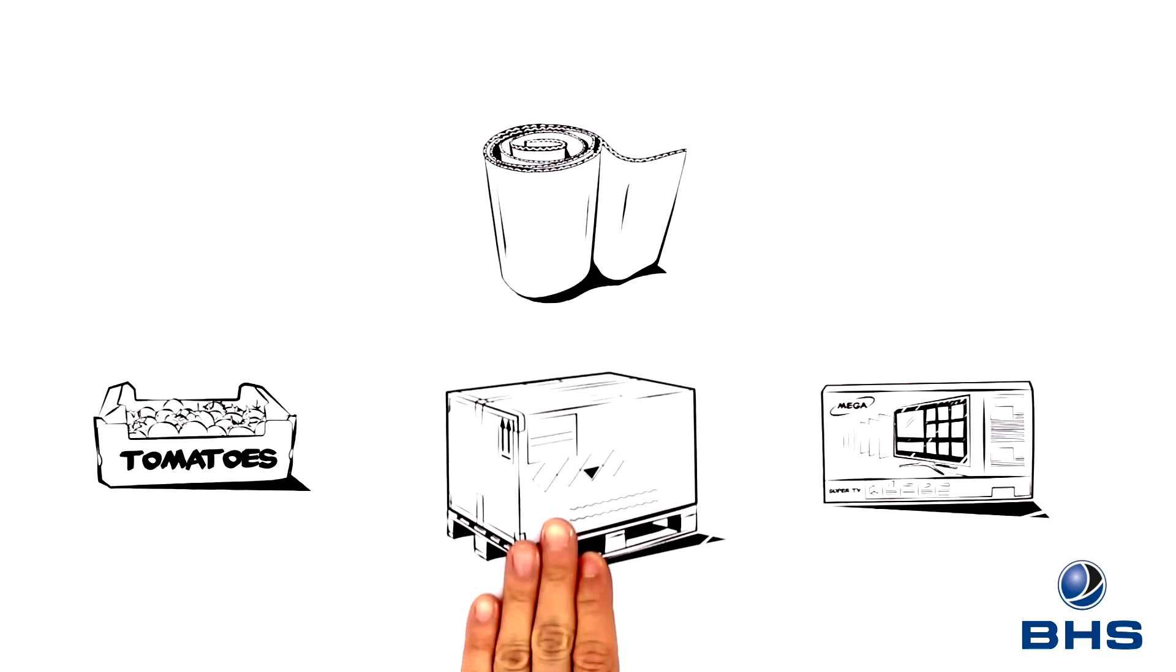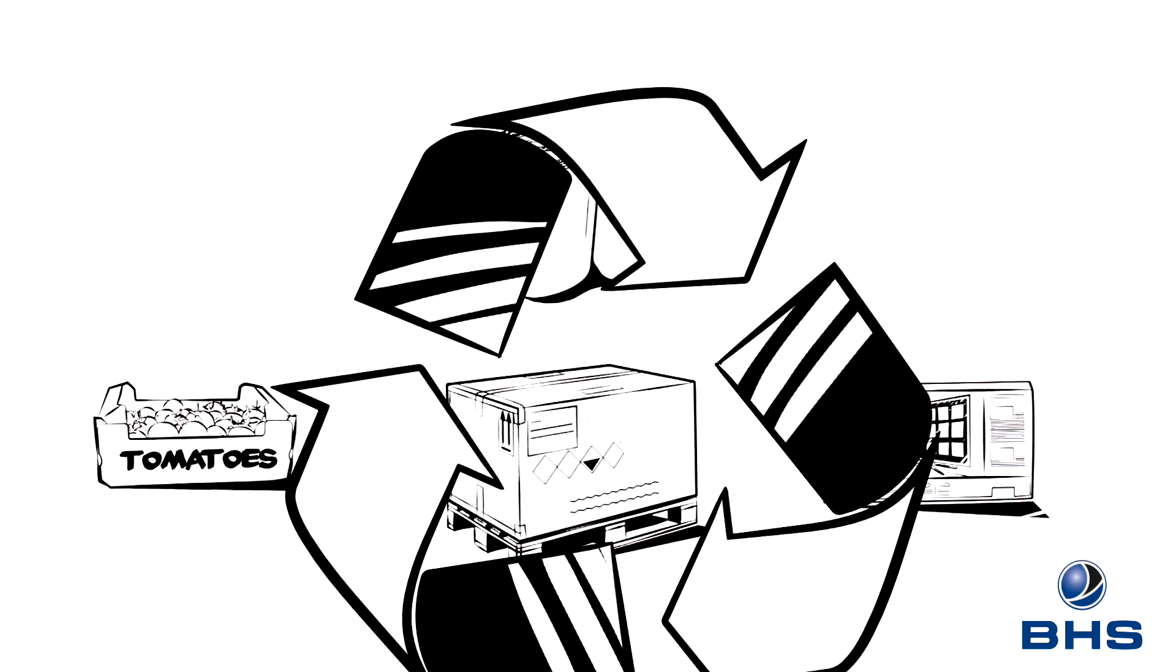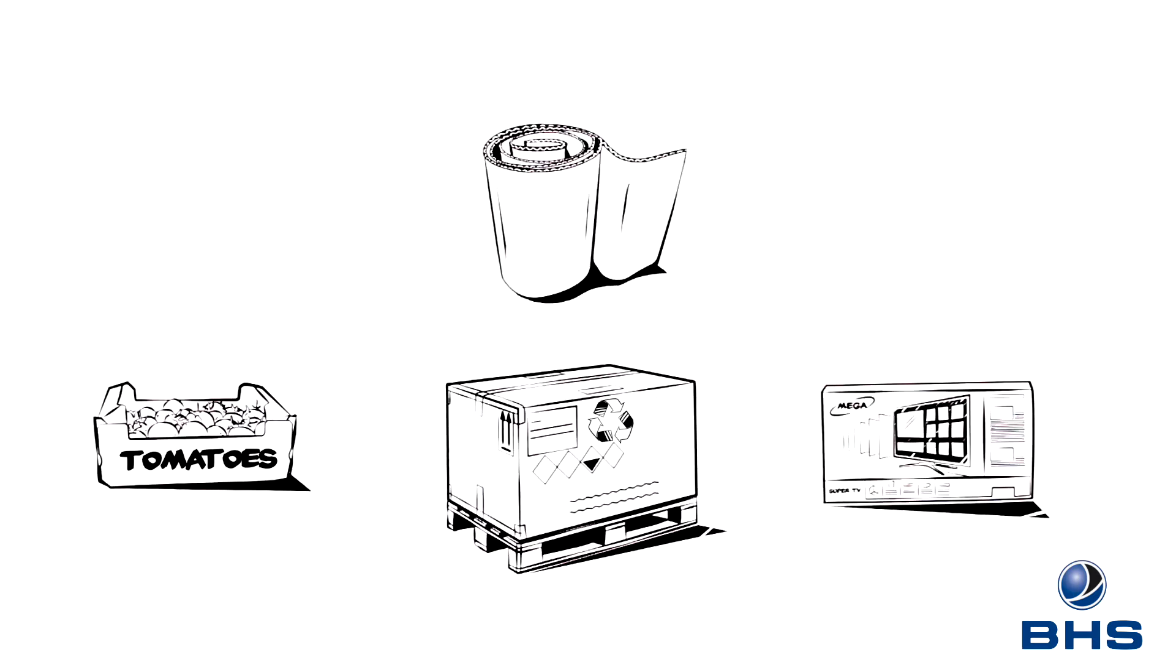Corrugated board is a little-known but frequently used packaging material. Many items that we find in the supermarket, as well as many other things from technical devices to heavy machinery, are packed in this 100% recyclable material. Even for hazardous goods, corrugated board is the packaging material of choice.